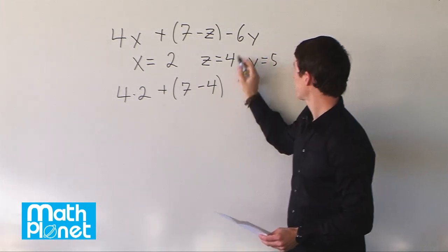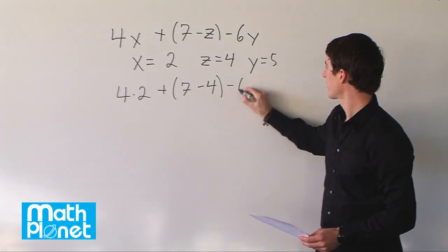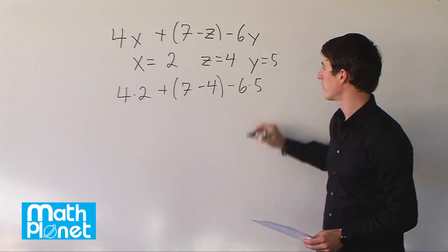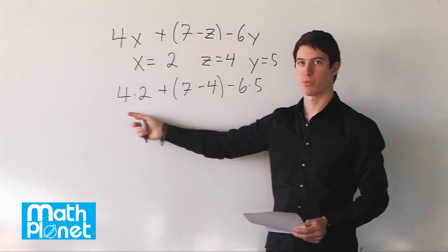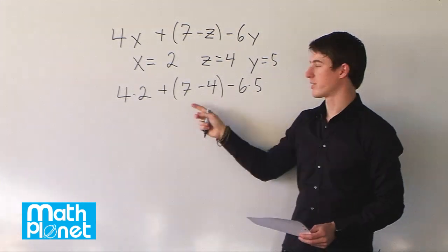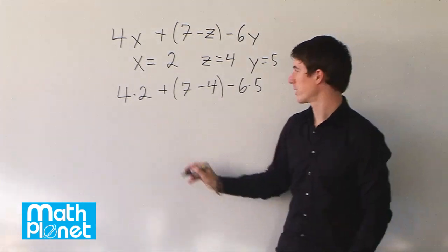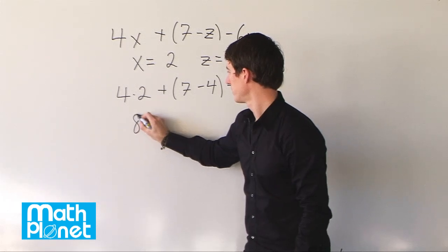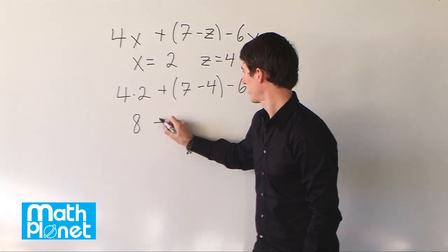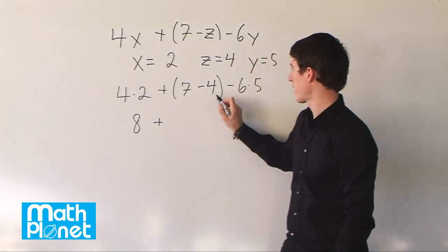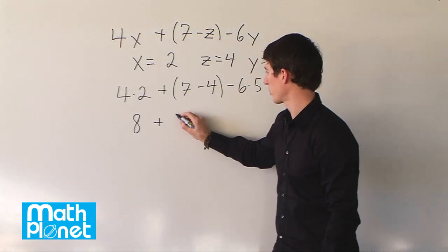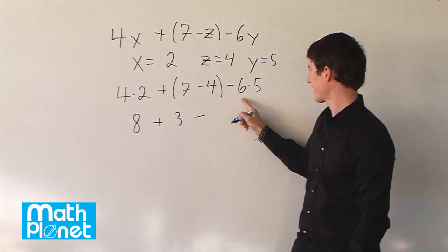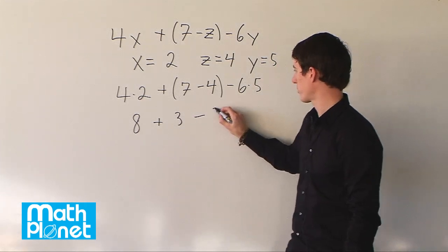And minus 6 times y which is 5. Now we can just multiply these out and simplify. 4 times 2 is 8, plus 7 minus 4 is 3, minus 6 times 5 is 30.